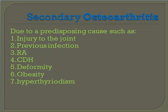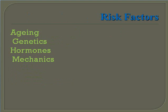Primary osteoarthritis is mainly due to wear and tear changes occurring in old age, mainly in weight-bearing joints. Secondary osteoarthritis is due to predisposing causes such as injury to the joint, previous infection, rheumatoid arthritis, CDH, deformity, obesity, and hypothyroidism.